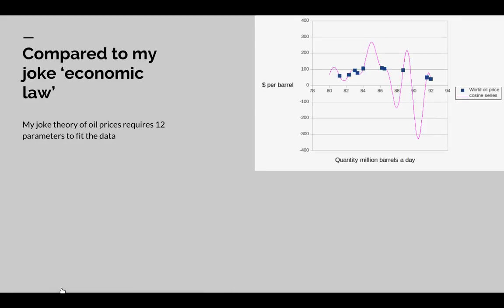Compare my joke Ptolemaic theory of the economy. The joke theory required 12 parameters to fit that data, and it fitted it exactly.